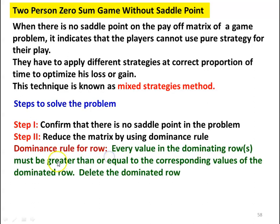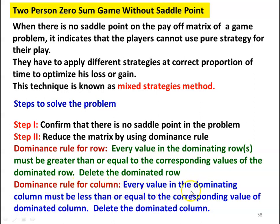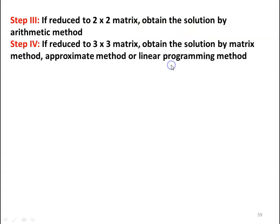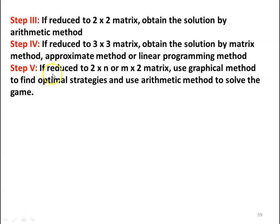There are two dominance rules. For the row dominance rule, every value in the dominating row must be greater than or equal to the corresponding value of the dominated row — in that case we delete the dominated row. Similarly, for the column dominance rule, every value in the dominating column must be less than or equal to the corresponding value of the dominated column — again we delete the dominated column. If the matrix is reduced to a 2×2 size, obtain the solution by the arithmetic method. If reduced to a 3×3 matrix, obtain the solution by the matrix method, approximate method, or linear programming method. If reduced to a 2×n or m×2 matrix, use the graphical method.